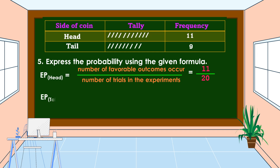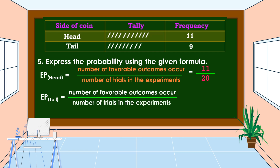Next, we are going to get the experimental probability of tail. Number of favorable outcomes occur divided by number of trials in the experiment. The number of favorable outcomes for tail is 9, and the number of trials in the experiment is 20. Therefore, the experimental probability of tail is 9 over 20.